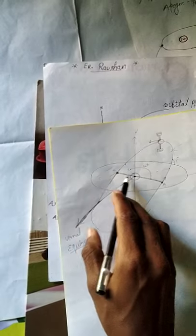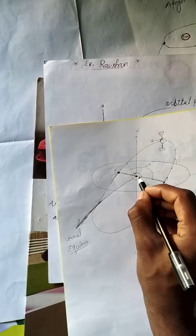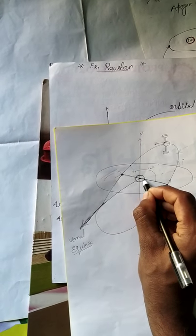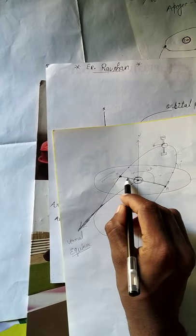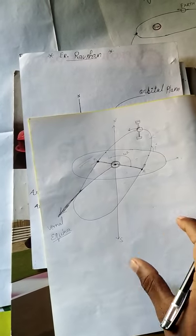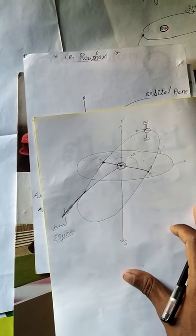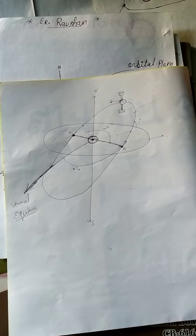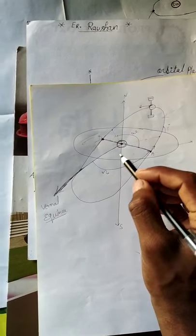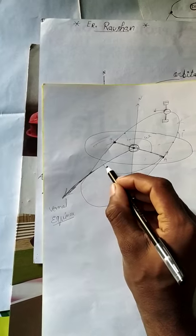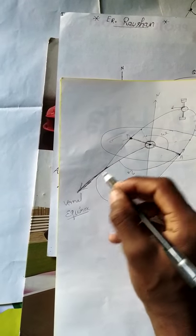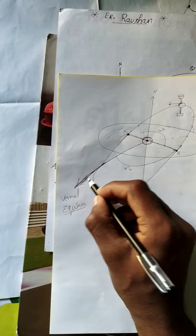This line — here is the Earth — this line is known as the line of node. And this is the vernal equinox arbitrary axis, pointing towards the vernal equinox.